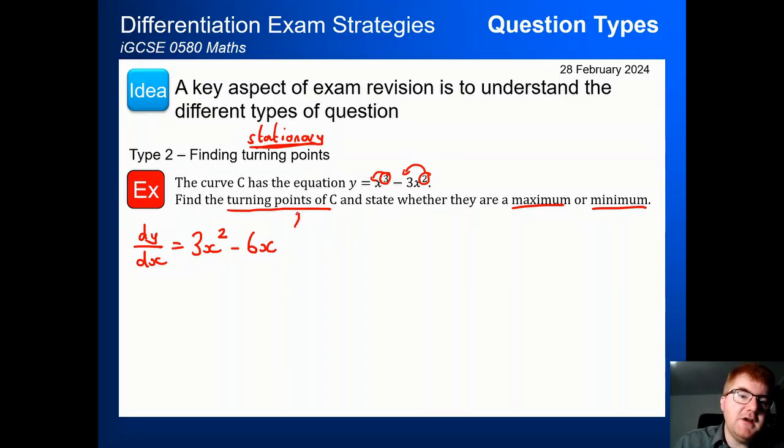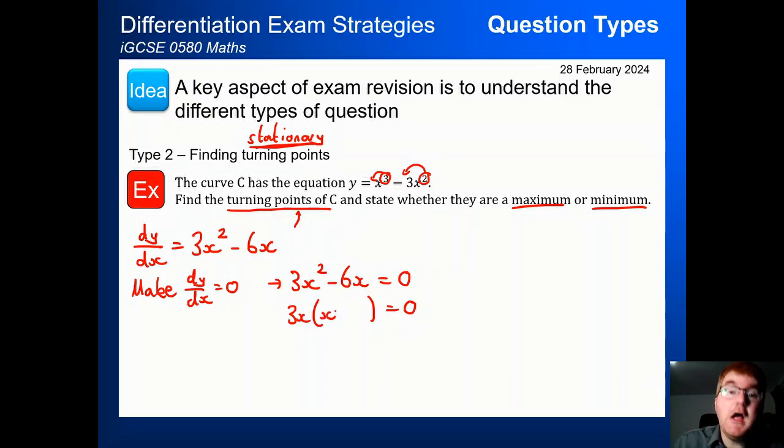Now because of this trigger word, turning point, we want to make dy by dx equal to 0. That means we need to solve this quadratic 3x squared minus 6x is equal to 0. Now this is a special kind of quadratic where we can factorise into a single bracket. So what do they have in common? Well they have 3x in common, and then we work backwards. What do you multiply 3x by to get 3x squared? Just x. What do you multiply 3x by to get minus 6x? Minus 2.